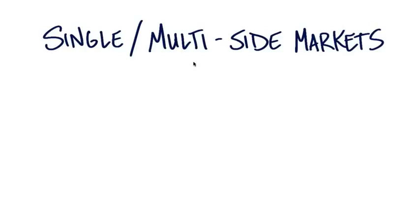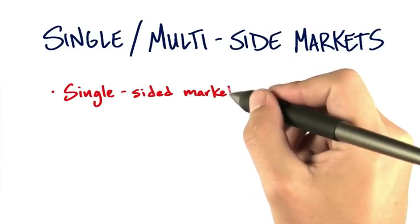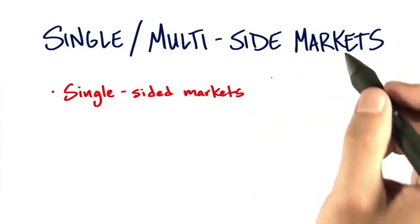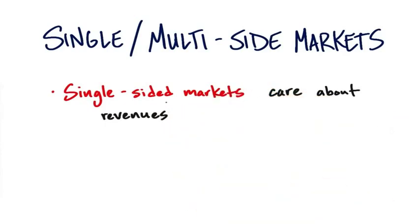One of the things I just want to reemphasize is the difference between single-sided markets and multi-sided markets. In single-sided markets, the customer is the user and the payer. There are no separate users and no separate payers — you're the customer and you're going to pay for it.